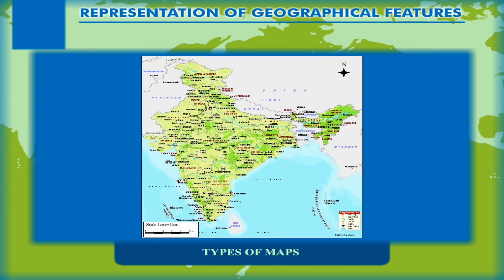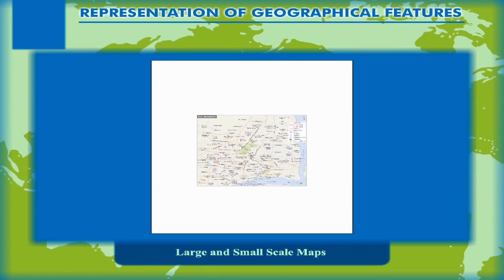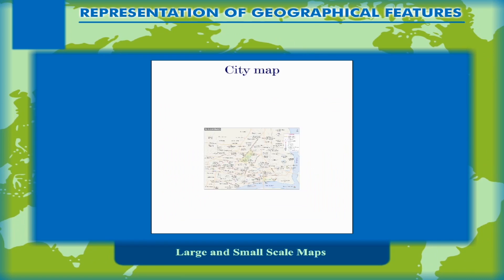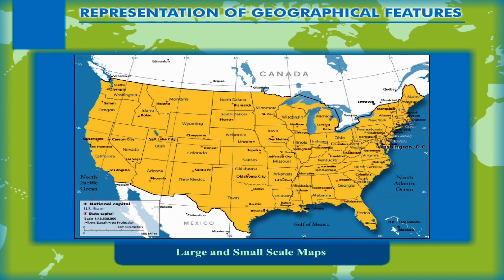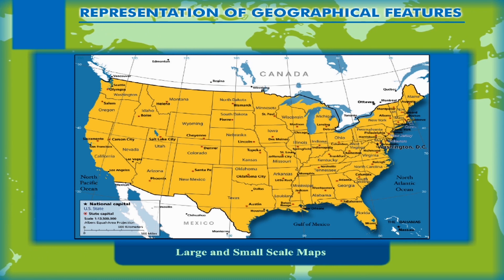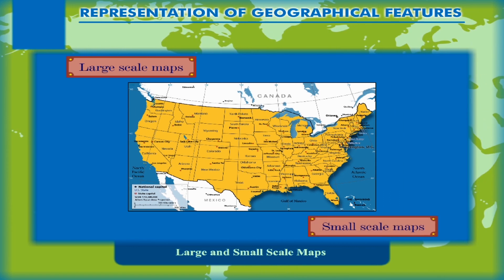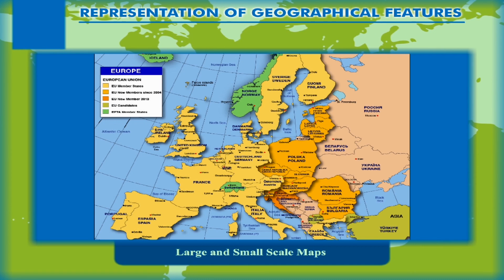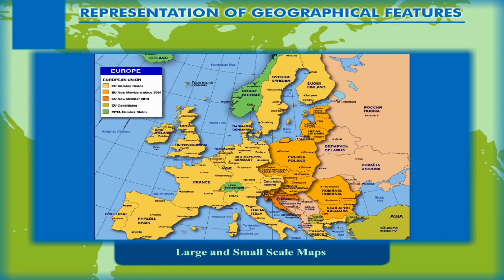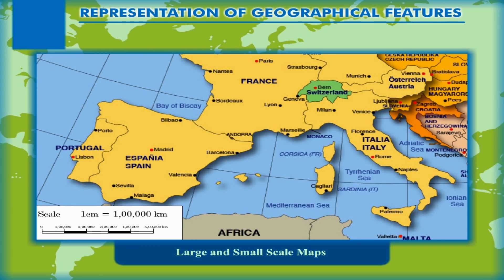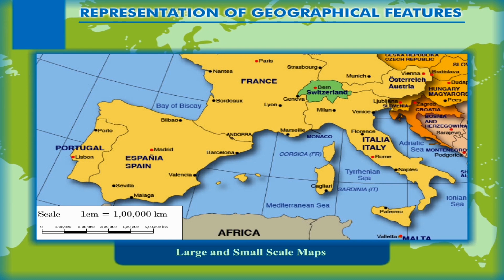Each map may be drawn of different size. Often, a book page is used to show a city but can also be used to show the world. On the basis of the size of the area drawn and the scale of the map, maps are classified into two types: large-scale maps and small-scale maps. When a large area is shown on a paper, very few details may be marked. For example, a map of the continent with the scale 1 cm equal to 1 lakh km cannot show the details of a city.